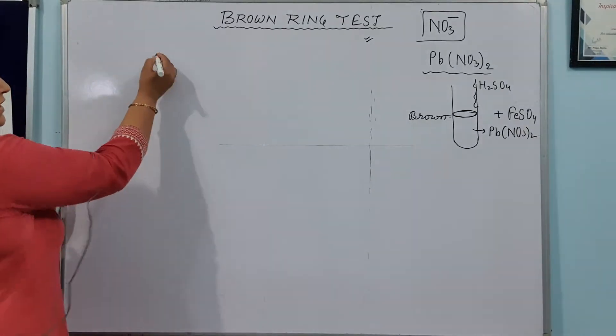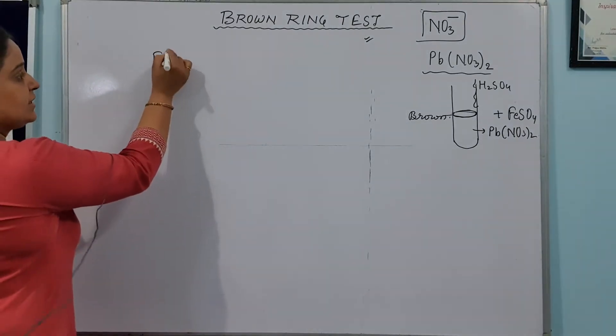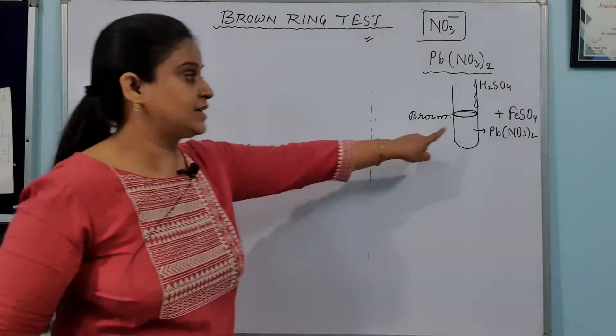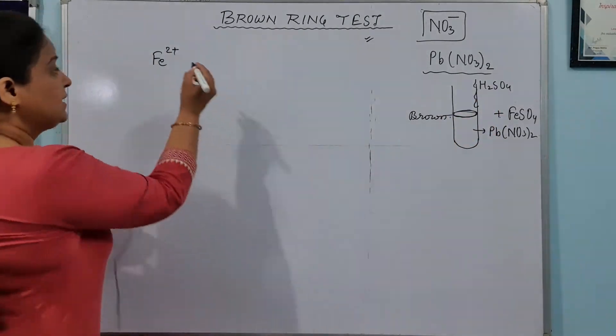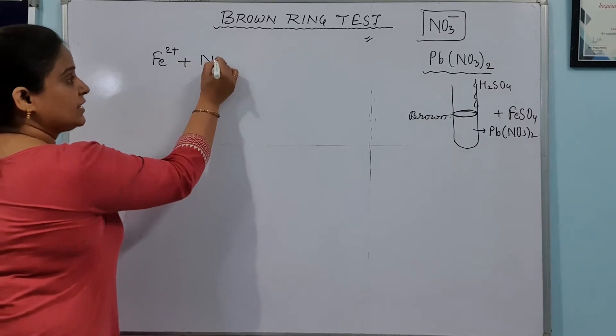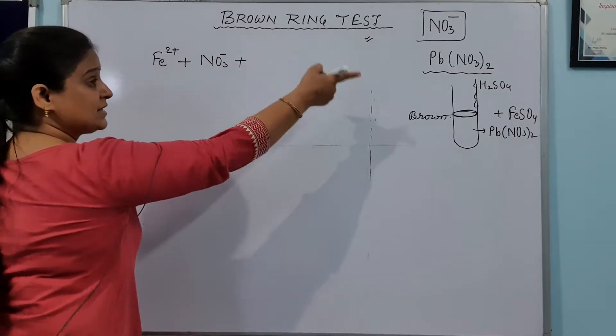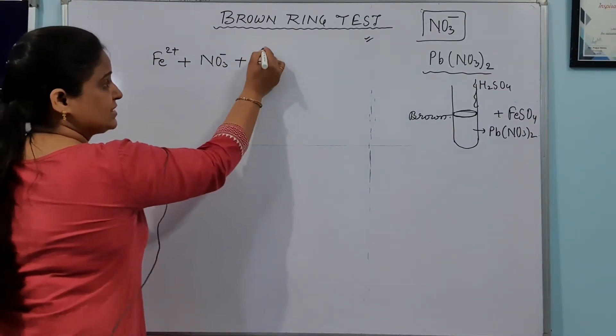Let's start. We are taking Fe2+ ion. FeSO4 has Fe2+. Along with that we have nitrate ion. And you are adding sulfuric acid means H+ ion.